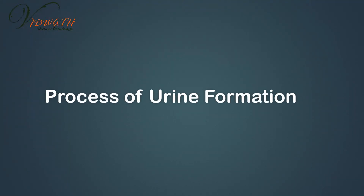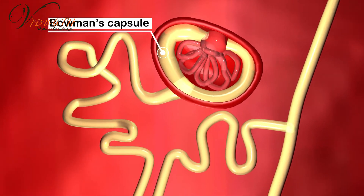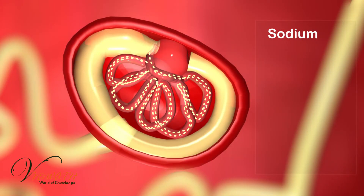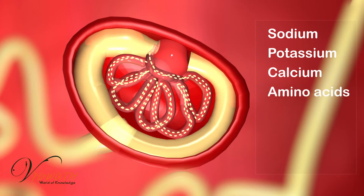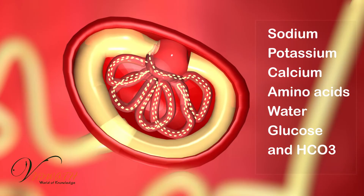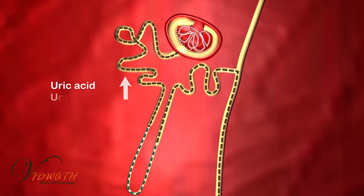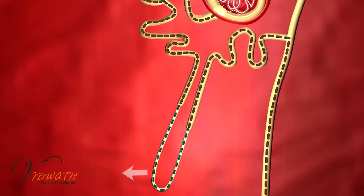Process of Urine Formation: The blood which gets filtered in the Bowman's capsule contains sodium, potassium, calcium, amino acids, water, glucose, and HCO3. The uric acid and urea enter the proximal convoluted tubule regions.